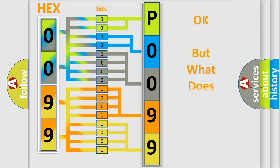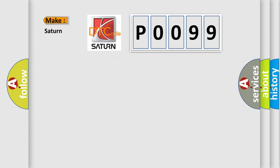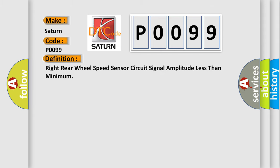The number itself does not make sense to us if we cannot assign information about what it actually expresses. So, what does the Diagnostic Trouble Code P0099 interpret specifically for Saturn car manufacturers? The basic definition is right rear wheel speed sensor circuit signal amplitude less than minimum.